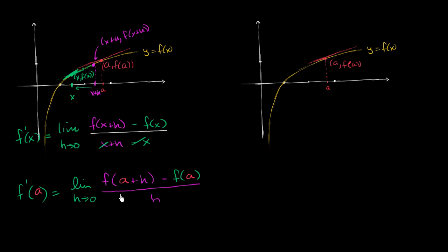Another way, and this is often used as the alternate form of the derivative, would be to do it directly. So this is the point a comma f of a. Let's just take another arbitrary point some place. So let's say this is the value x. This point right over here on the function would be x comma f of x.